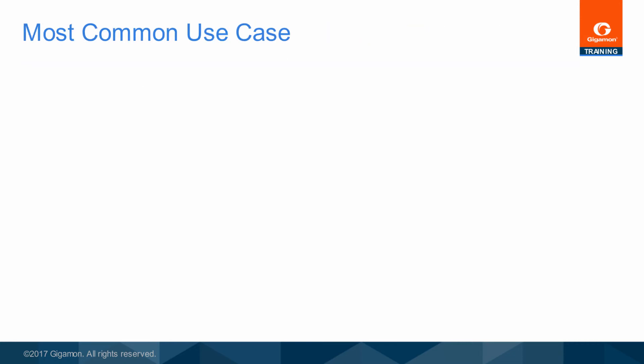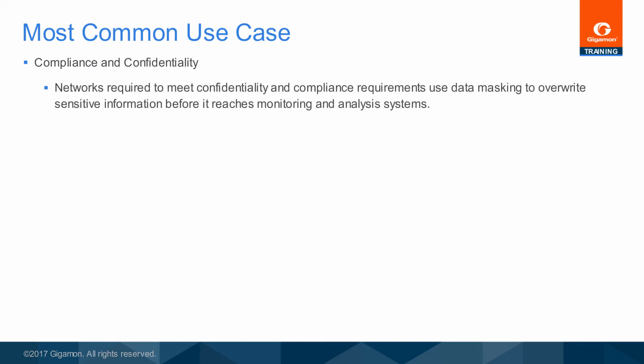The most common use case for the GigaSmart data masking application is compliance and confidentiality. Enterprise networks that are required to conform to confidentiality and compliance regulations use data masking to overwrite sensitive information before it reaches the monitoring and analysis tools. This is especially useful when network management and monitoring has been outsourced.